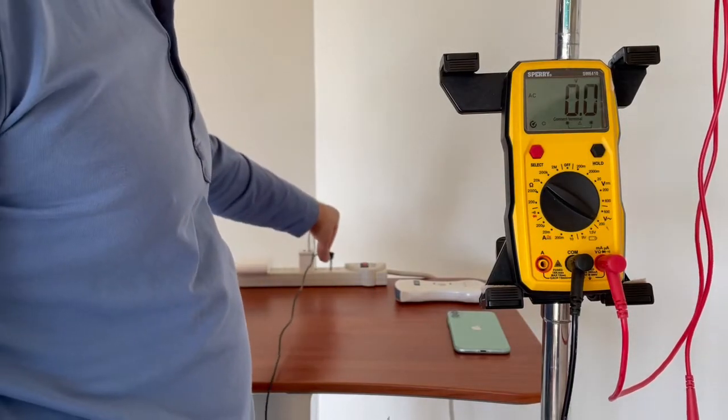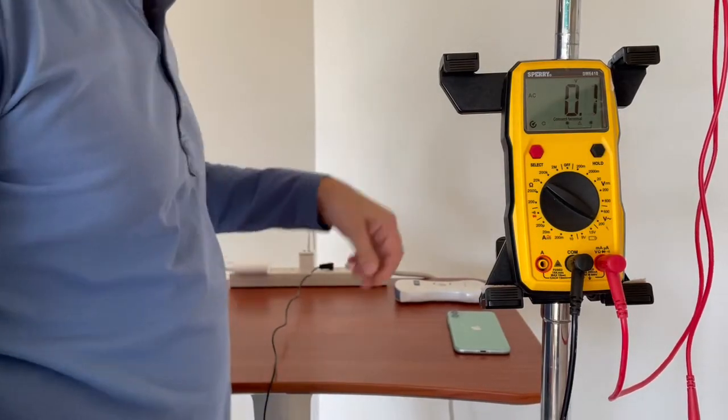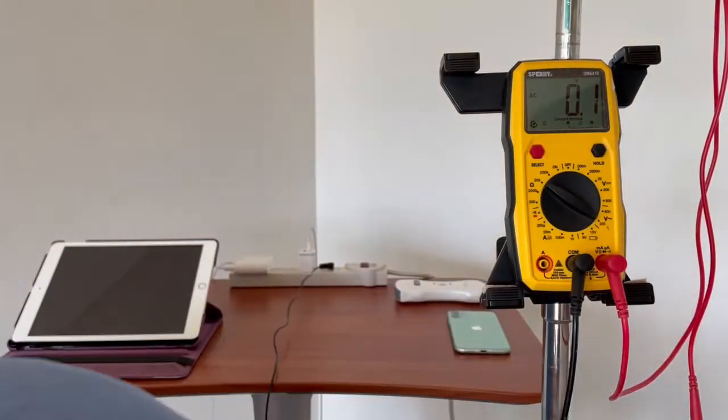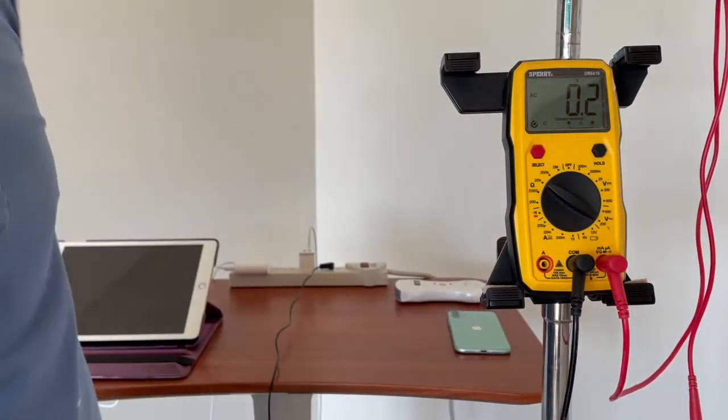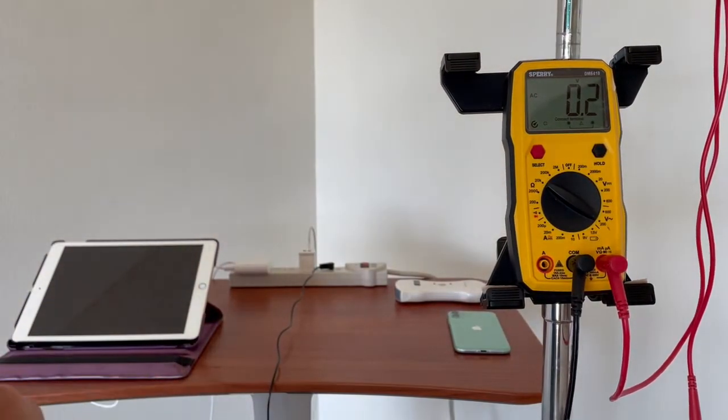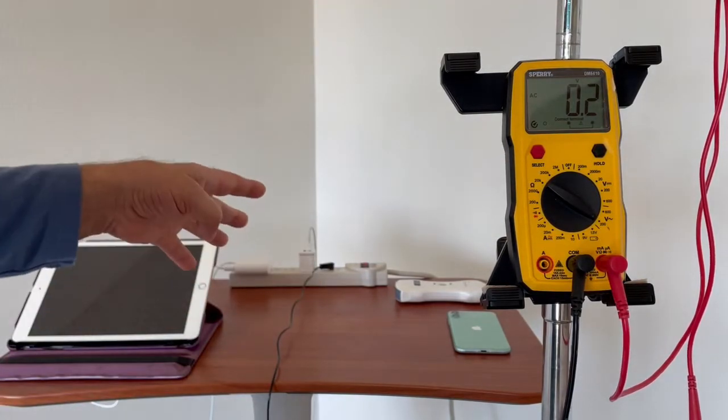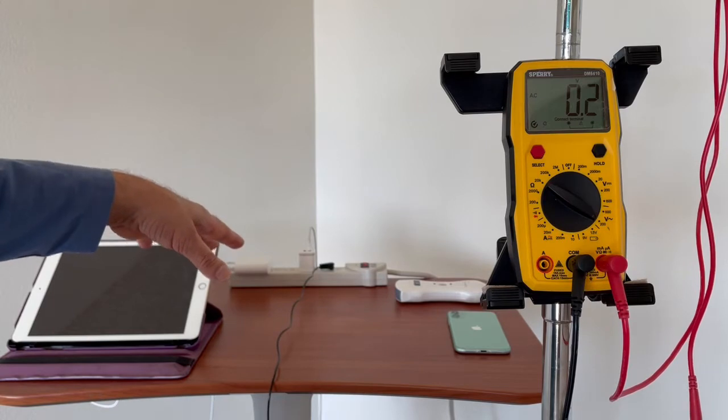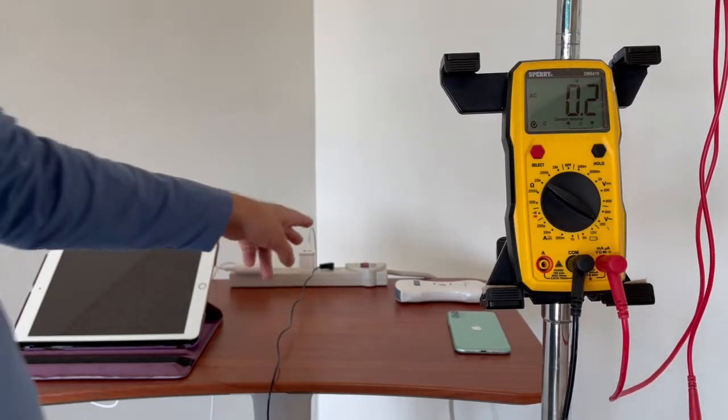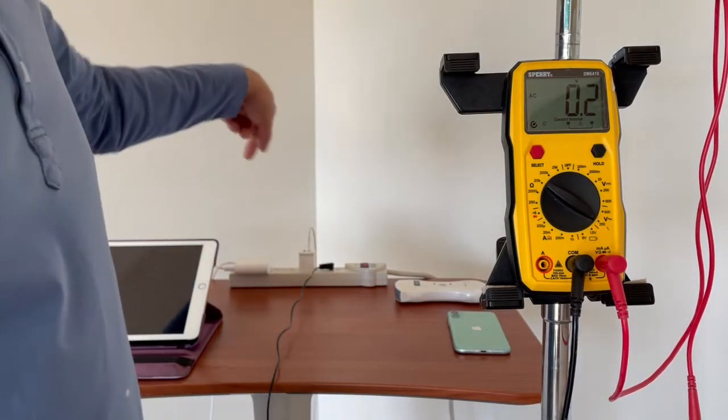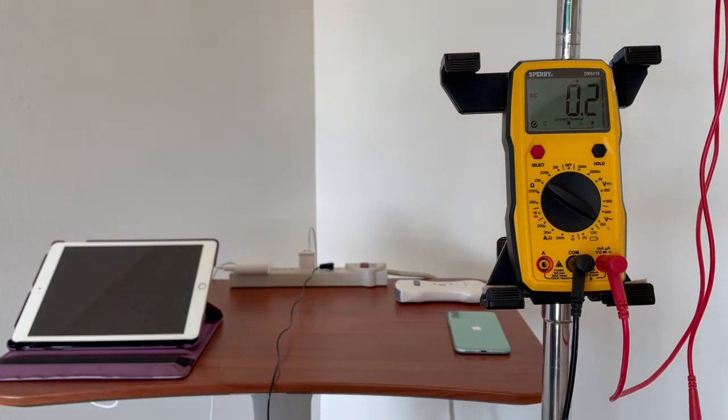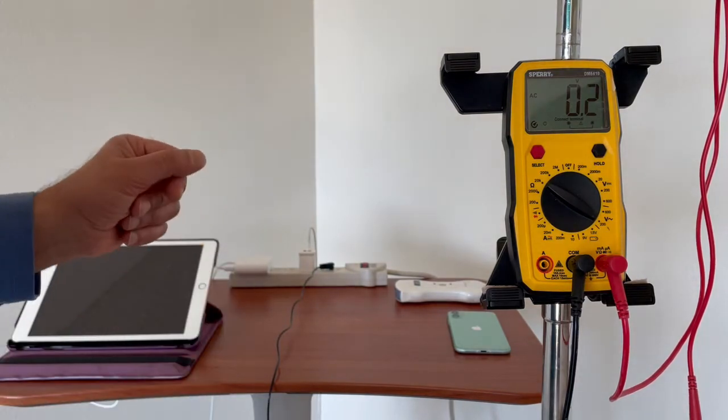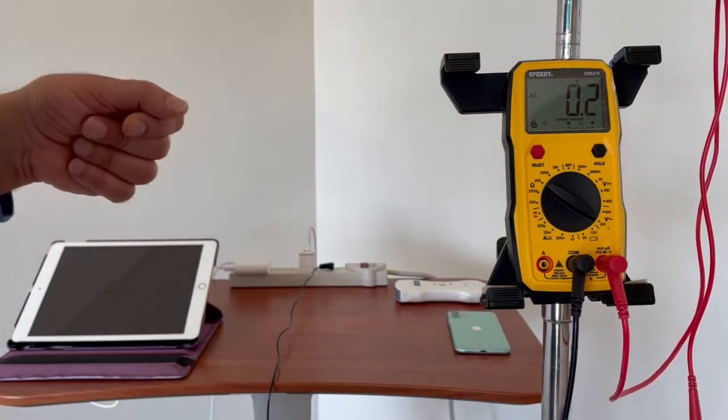And so you plug this in here and basically that allows you to compare the amount of current going through any object compared to the ground, which is a metal post that goes a few feet under the ground and is outside your house.